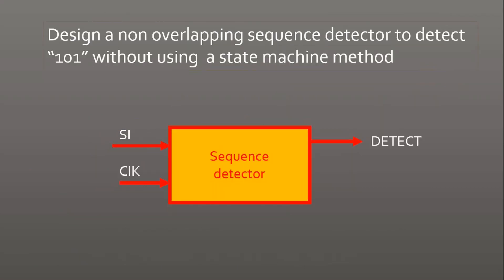Now there is a question for you on the screen: design a non-overlapping sequence detector to detect 101 without using the state machine method. We already discussed the overlapping version, but now you need the non-overlapping design. This question is left unanswered — please write your answer in the comment section. I hope this video was informative. Don't forget to subscribe and press the bell icon for upcoming videos. Thank you for watching.